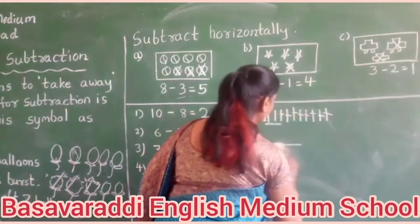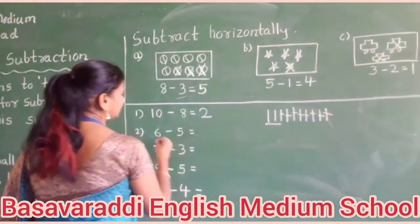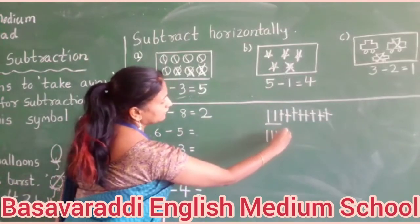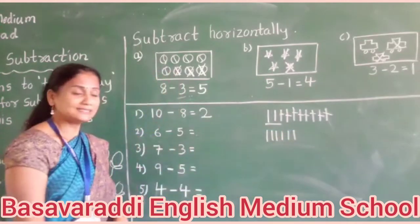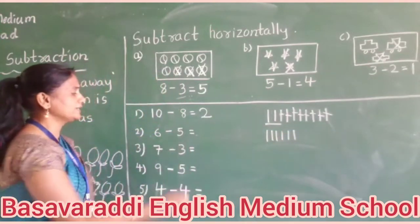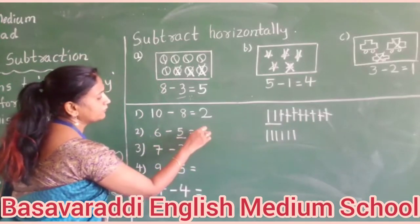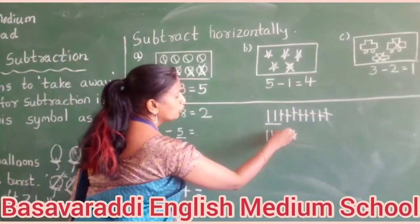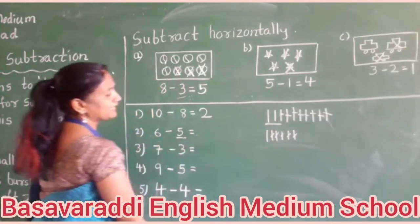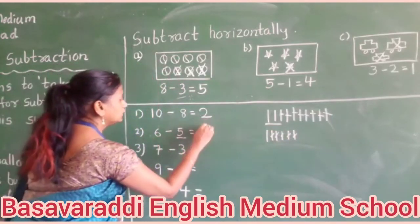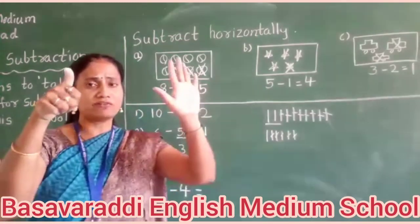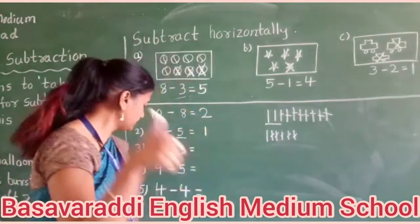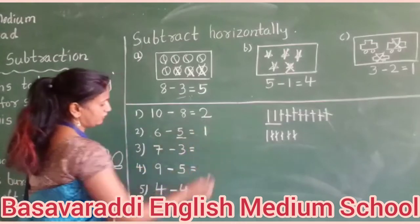Six minus five. We have to put the line: one, two, three, four, five, six. In six, we have to cross out five. Remaining, we have to write here. Take away: one, two, three, four, five crossed. How many lines remaining? Only one. I hold six fingers and fold five fingers — with me only one. The answer is one.